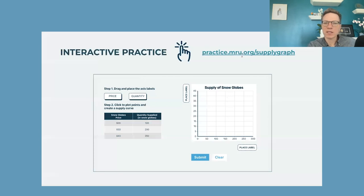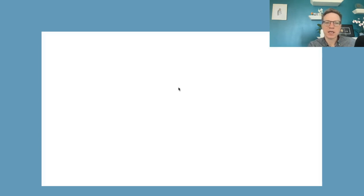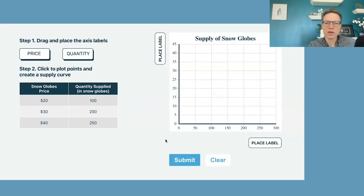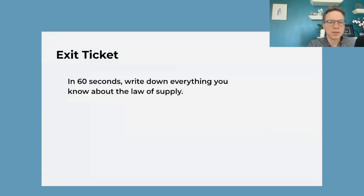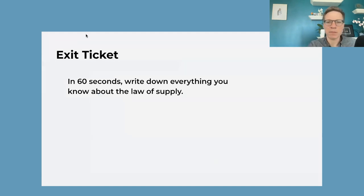Once again, we have an interactive practice — similar to our graph-a-demand-curve activity — where students have to graph a supply curve. They put the price and quantity on the proper axes and then plot it out. For each of these days so far, we've had a nice interactive for students to bring that home. Then an exit ticket: retrieval practice for students to see how much they can remember about the law of supply.